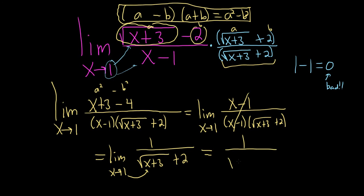So it's 1 over the square root of 1 plus 3. Then we have our plus 2 over here. So this is equal to 1 over the square root of 4 plus 2. What a nice problem. And the square root of 4 is 2. So you just get 1 over 2 plus 2, which is equal to 1 over 4.